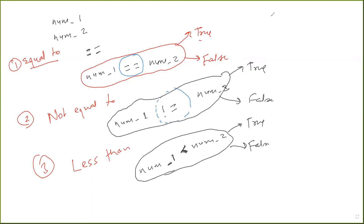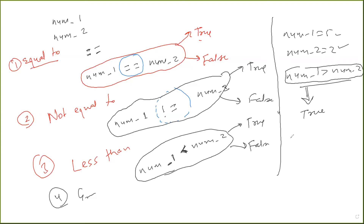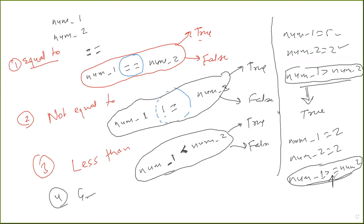Suppose num one is equal to five and num two is equal to two. There are also operators like greater than equal to and less than equal to. If I say num one greater than num two, the output will be true because num one is five and num two is two. There is also equal to: suppose num one equals two and num two equals two, then num one >= num two returns true because it takes equality into consideration as well. These operators check if a value is equal to, greater than, less than — all the possibilities of comparison.